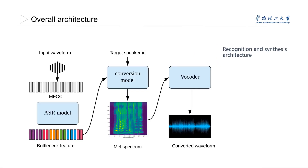The overall architecture of the proposed voice conversion system consists of three parts. The ASR model is used to transform acoustic features into linguistic representations, i.e., bottleneck features.